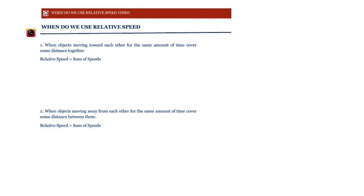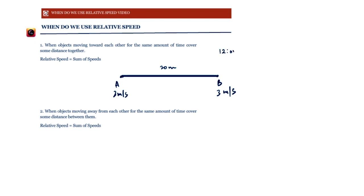We use relative speed when objects are moving towards each other for the same amount of time and they cover some distance together. For example, say we have two objects with a distance of 20 meters between them. Object A has a speed of 2 meters per second and object B has a speed of 3 meters per second. If both A and B start moving towards each other at the same time and keep moving until they meet, we use the concept of relative speed.